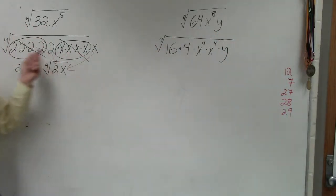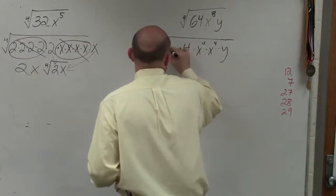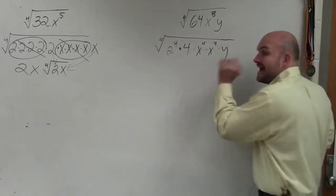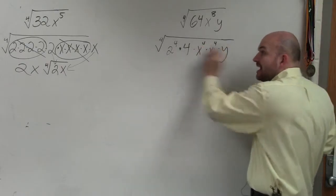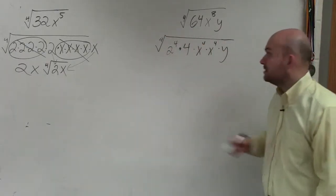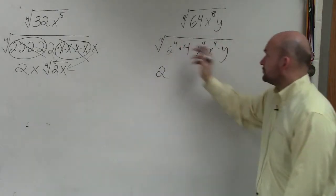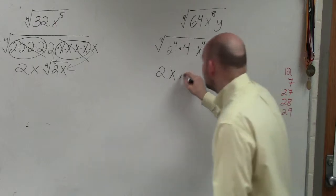Can I rewrite 16 as 2 to the fourth power? Yes. Now, remember, using it this way, every single power, every single exponent that's raised to the fourth power, I can take the fourth root of. So the fourth root of 2 to the fourth power is 2. The fourth root of x to the fourth power is x. Fourth root of x to the fourth power is x.